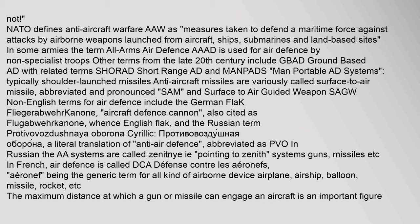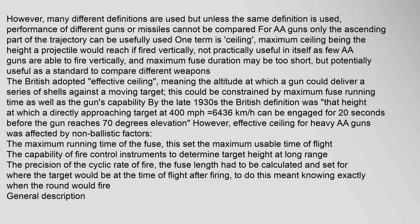The maximum distance at which a gun or missile can engage an aircraft is an important figure. However, many different definitions are used, and unless the same definition is applied, performance of different guns or missiles cannot be compared. For AA guns, only the ascending part of the trajectory can be usefully used. One term is 'ceiling' — maximum ceiling being the height a projectile would reach if fired vertically. The British adopted 'effective ceiling,' meaning the altitude at which a gun could deliver a series of shells against a moving target.